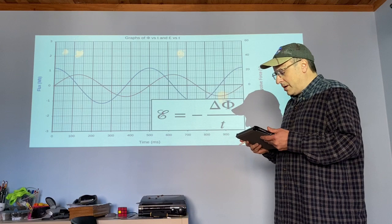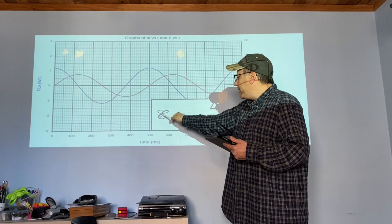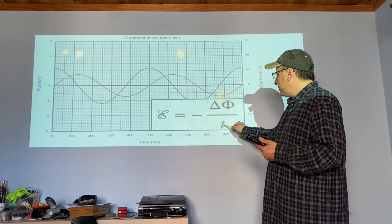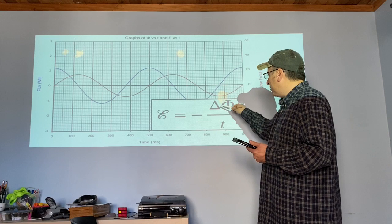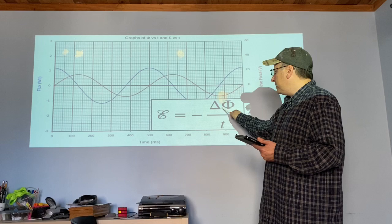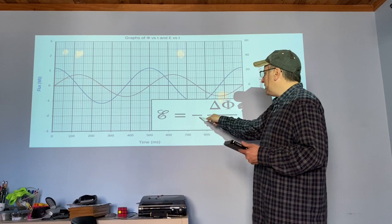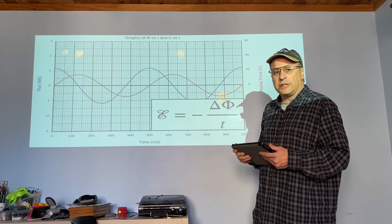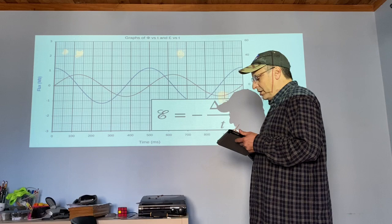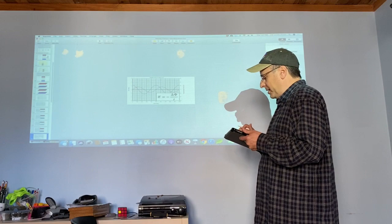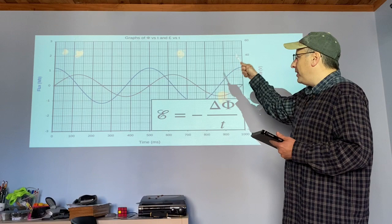This gives us our final equation: the voltage generated in a generator equals the rate at which the flux changes — the change in flux per second. We include a negative sign so that when the flux is increasing we get a negative voltage, and when the flux is decreasing we get a positive voltage. This idea that the voltage has the opposite sign of the slope is known as Lenz's Law — spelled L-E-N-Z.